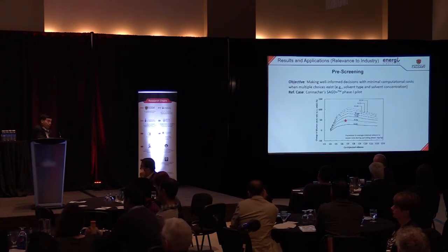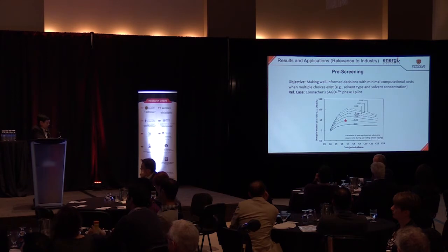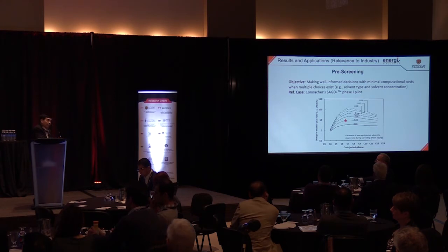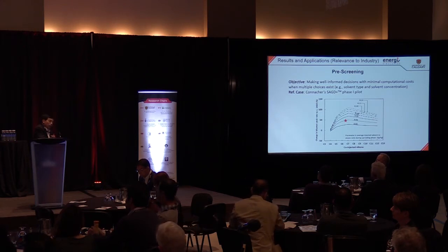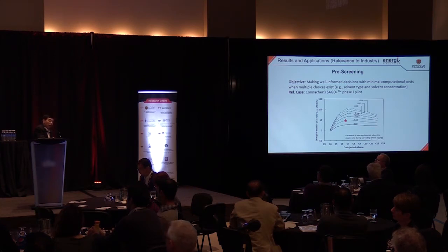First, we need to do pre-screening — for instance, what kind of solvent you are using and what concentration. The x-axis is the number of carbons, and the y-axis is the change in production rate. You can see different combinations from C4 to C12. The star marks the solvent used by the company. From this, you can see the percentage increase in production. C4 is not a good choice — too light — and C10 is also not a good choice. For this particular example, we found a mixture of C6 to C8 is a good choice.